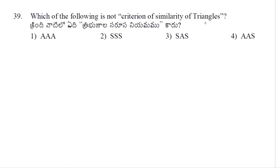Which of the following is not a criterion of similarity of triangles? We have similarity criteria: AAA, SSS, SAS. But AAA is only for congruency. So option 4 is correct — we don't have an AAAA similarity rule, we have AAA congruency rule only.